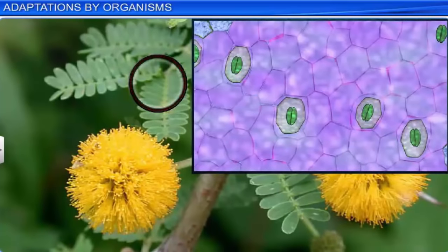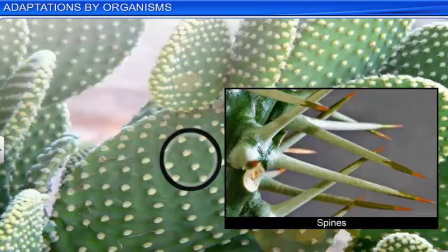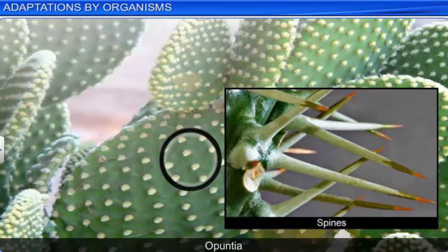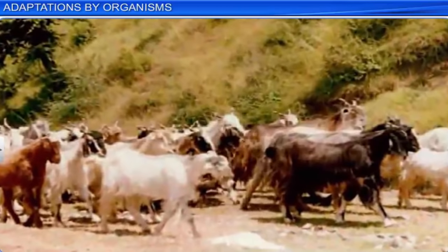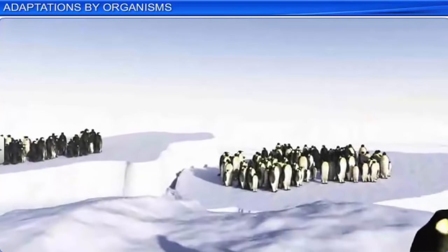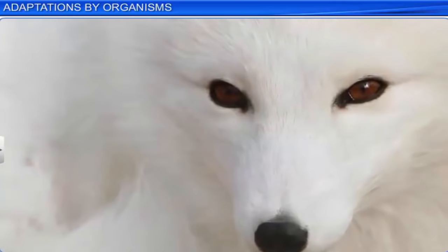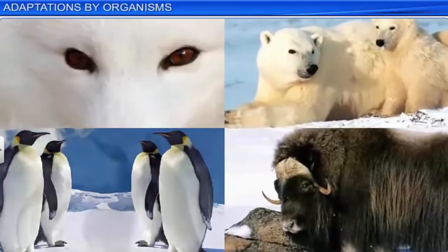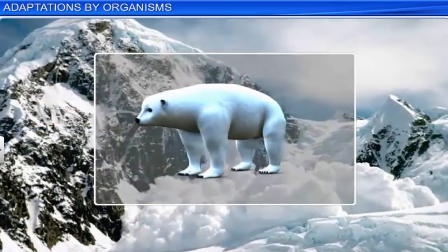Some desert plants, like the Opuntia, have leaves that are reduced to spines, and its flattened spongy stems perform photosynthesis. While some plants and animals have adapted to prevent the loss of water, some animals, particularly those found in colder regions, have adapted themselves to prevent the loss of heat. For instance, mammals from colder climates generally have shorter tails, limbs, and ears, which help reduce loss of heat. This adaptation is called Allen's rule. Moreover, in the polar seas, aquatic mammals such as seals, whales, and dolphins have a thick layer of fat known as blubber below their skin, which acts as an insulator and minimizes the loss of body heat.